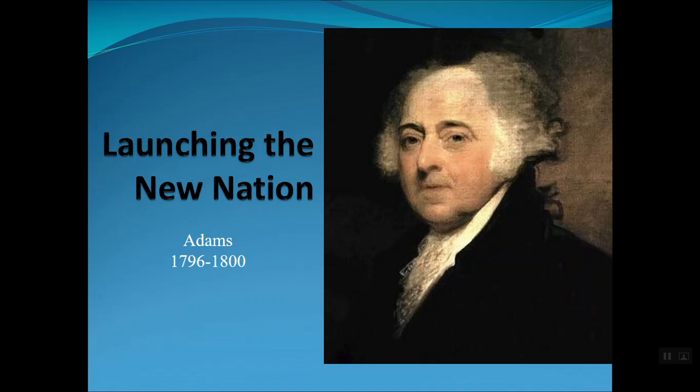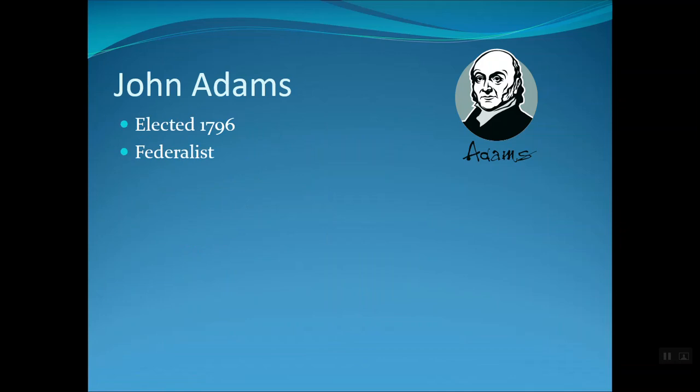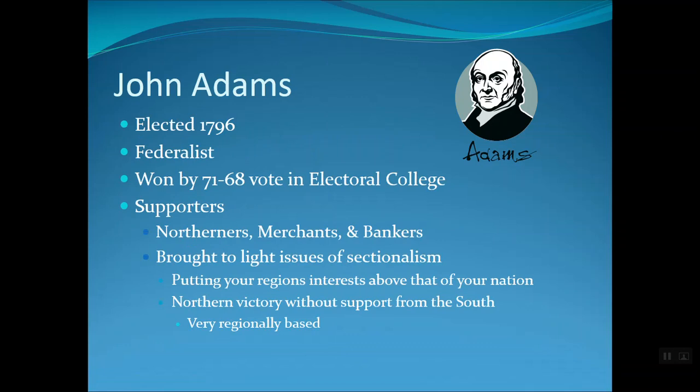John Adams was elected in 1796. He was a Federalist who won by a 71 to 68 vote in the Electoral College. His supporters were Northerners, merchants, and bankers. It brought to light issues of sectionalism — where you put your region's interests above that of your nation. It was a Northern victory without support from the South, which meant it was very regionally based.